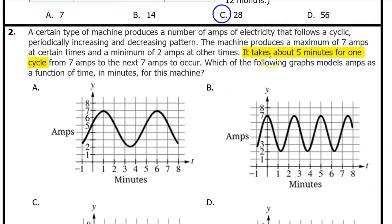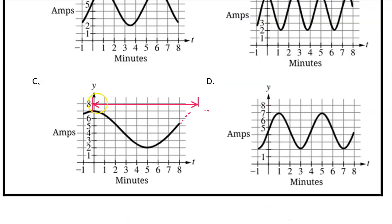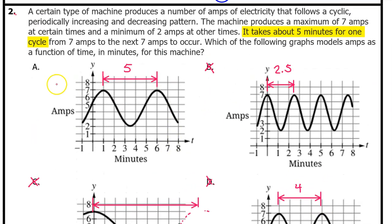So let's focus on the part where it says it takes 5 minutes for one cycle. That's going to be the period of the function. Option A does have a period of 5. Option B has a period of 2.5, so B is out. It's hard to know what the period of option C is because I'm measuring from peak to peak and the second peak isn't even on the graph. So the period is definitely greater than 5, so C is out. And option D has a period of 4, so D is out. That means the answer is A. It's the only one that has a period of 5.